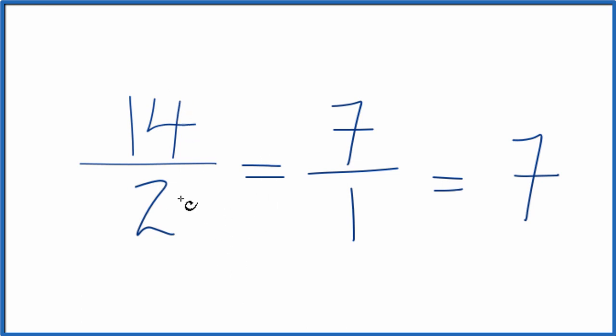Note that 14 over 2 is what we call an improper fraction. The numerator is larger than the denominator. So in this case, we can divide 14 by 2 and that would get us to 7 directly.